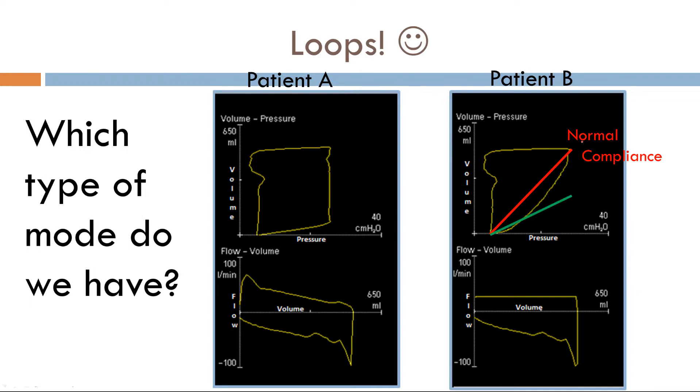Now, if the slope were down here, what do you think the compliance would be? Do you think it'd be low or high? It would be low. Contrast that if the slope were up here, then the compliance would be really high.